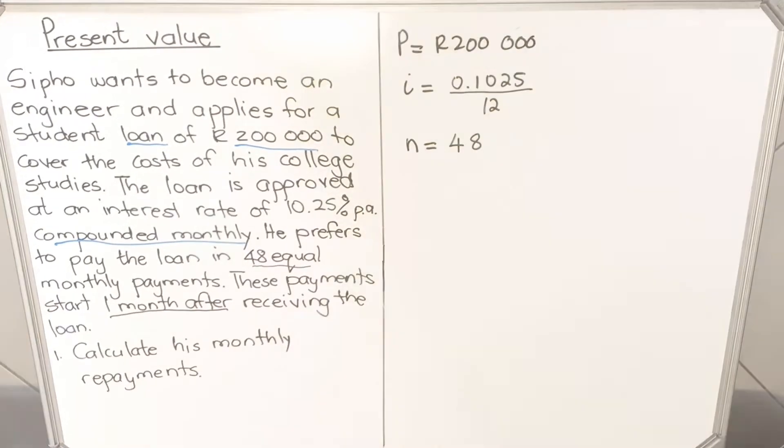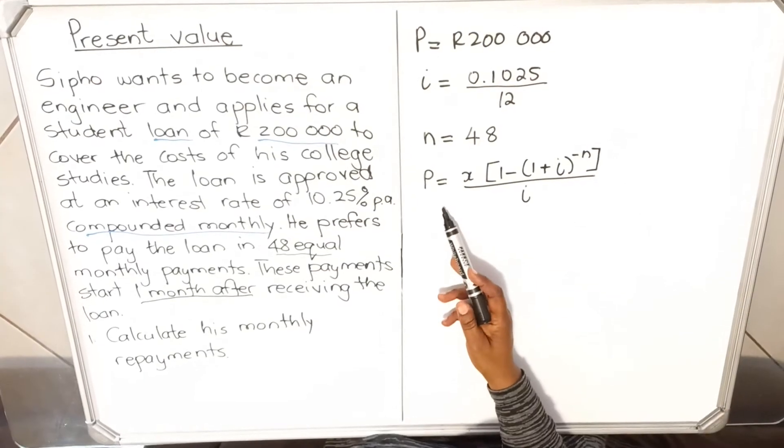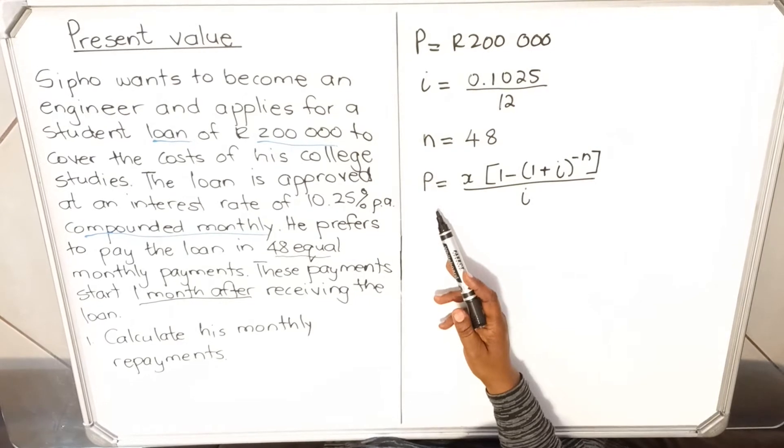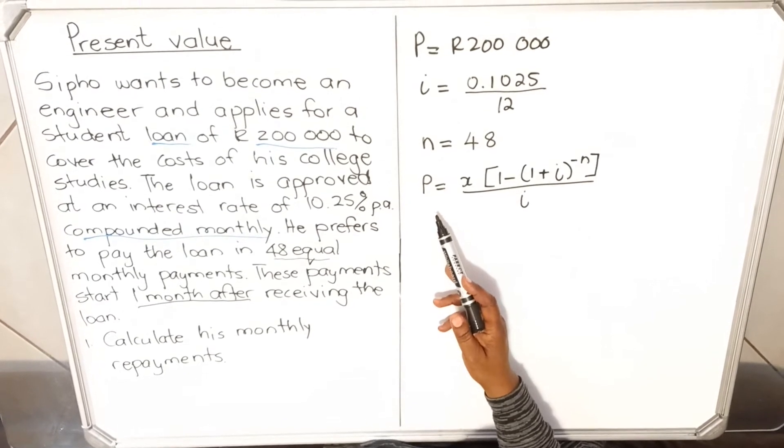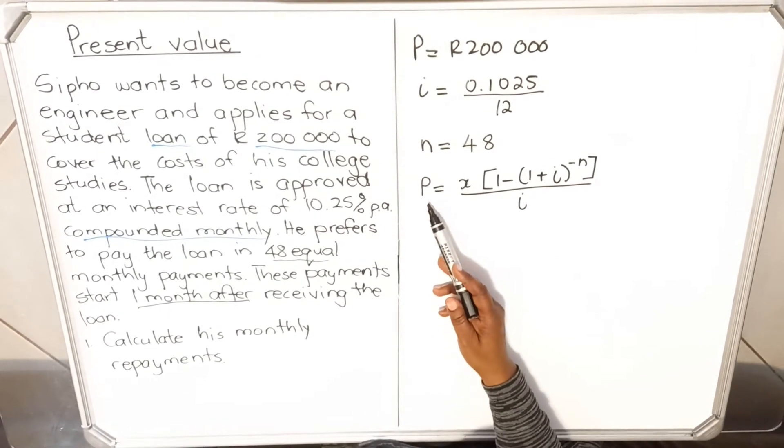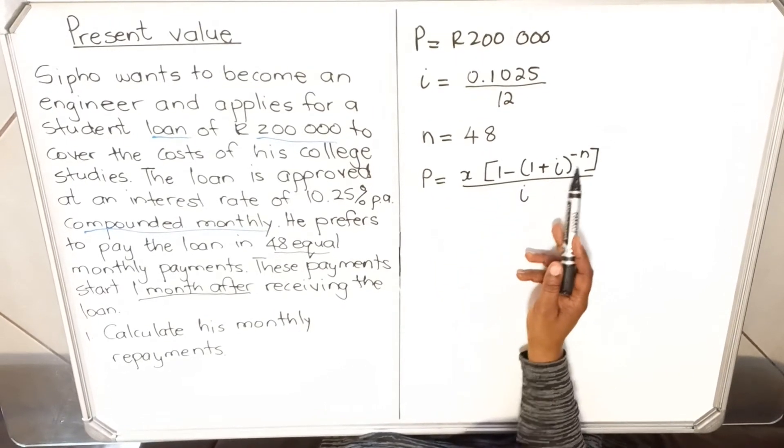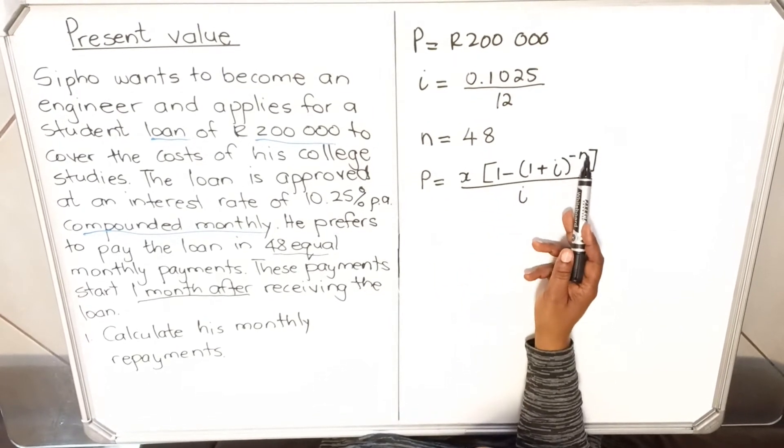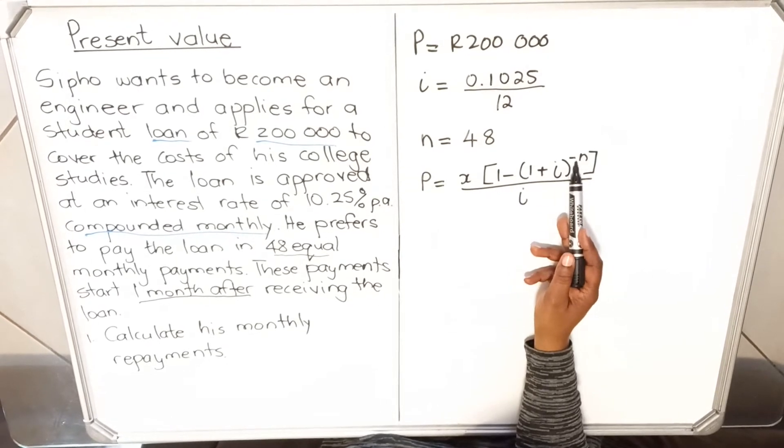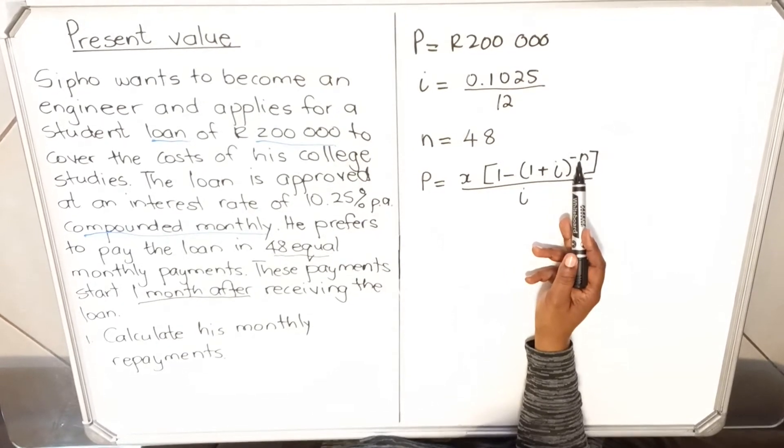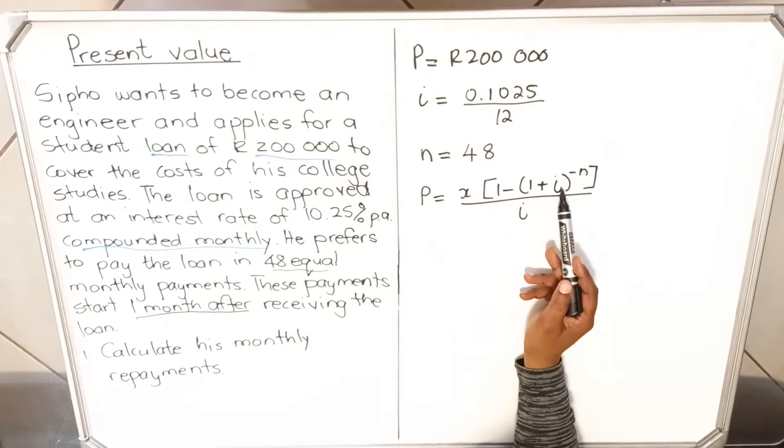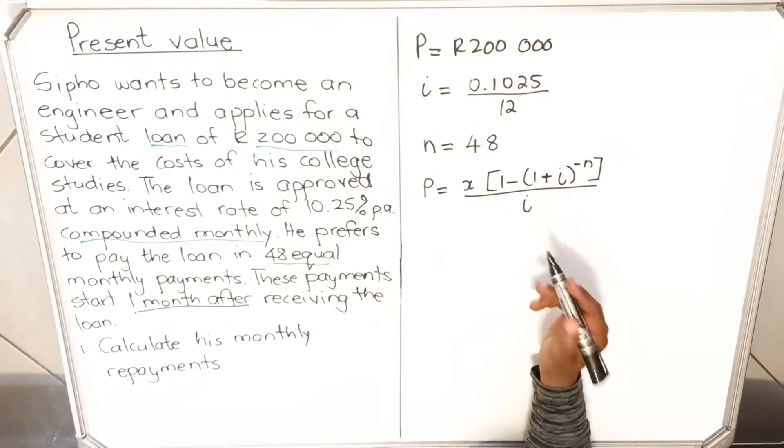We're going to calculate the monthly payment. To write the present value formula, it's similar to the future value but it's not the same. You have to look at the formula. It has a P, and then it's x into 1 minus (1 plus i). Very important, with a present value the n is minus n. With a future value there is just n, but here it's not exactly the same, so you have to copy it from your formula sheet.